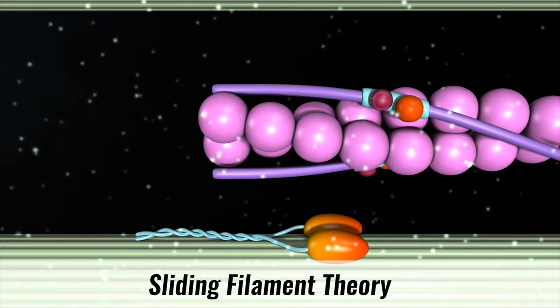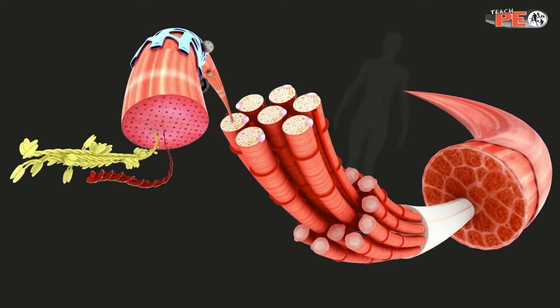Sliding filament theory is the mechanism by which muscles are thought to contract at a cellular level. An understanding of the structure of skeletal muscle is useful when learning how sliding filament theory works.